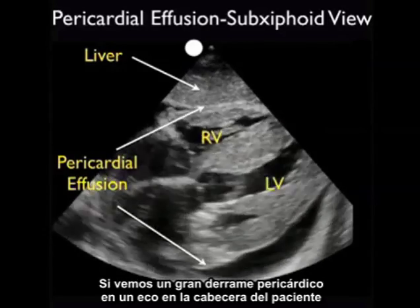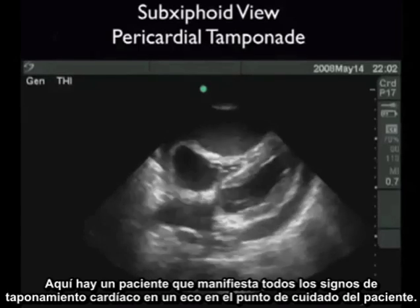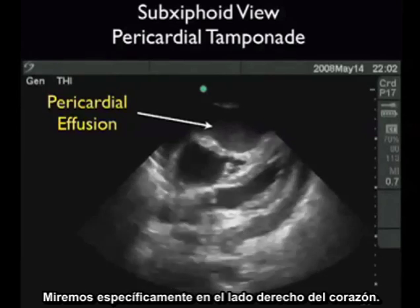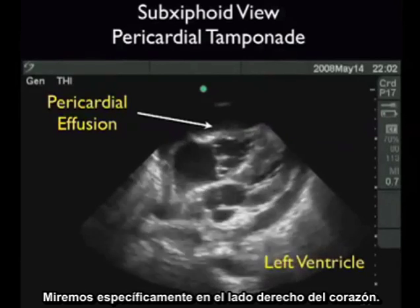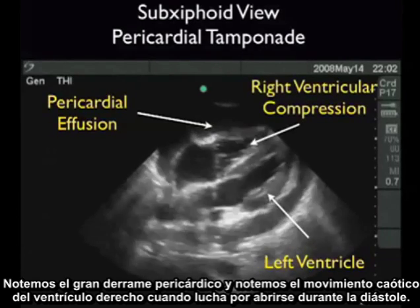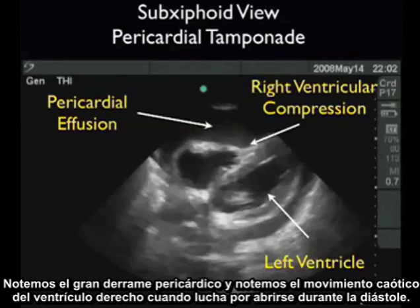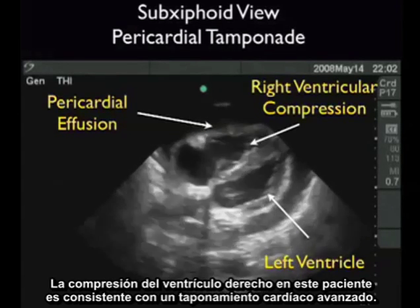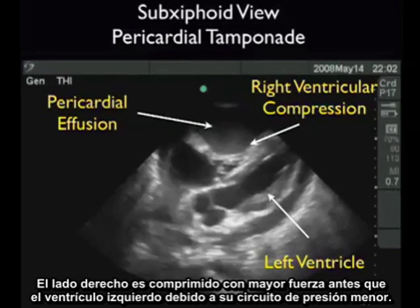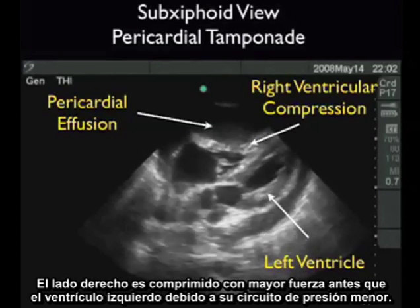If we see a large pericardial effusion on bedside echo, our next move is to look for signs of cardiac tamponade. Here's a patient who manifests all the signs of cardiac tamponade on bedside echo. Let's look specifically at the right side of the heart. Notice the very large pericardial effusion and the chaotic movement of the right ventricle as it struggles to open during diastole. The compression of the right ventricle is consistent with advanced cardiac tamponade. The right side of the heart is preferentially compressed before the left ventricle due to its lower pressure circuit.